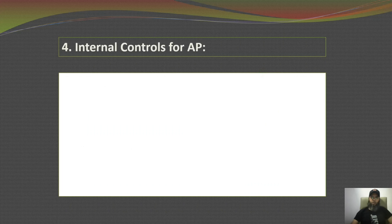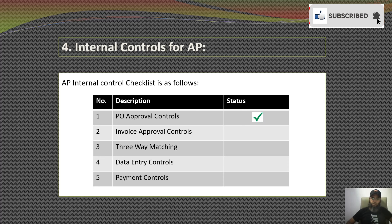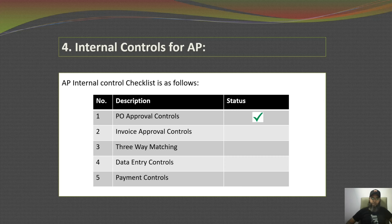The next slide is very important — this is the internal control checklist for accounts payable. The first control is PO approval controls. PO refers to purchase order. Manual PO approval processes provide poor internal controls and can result in fraud, errors, and missed opportunities. Automating PO approvals creates an efficient process, allowing managers to approve POs from anywhere in the world with a single click, providing total transparency into the approval process.